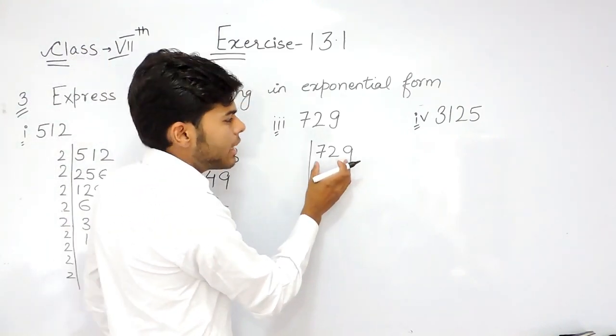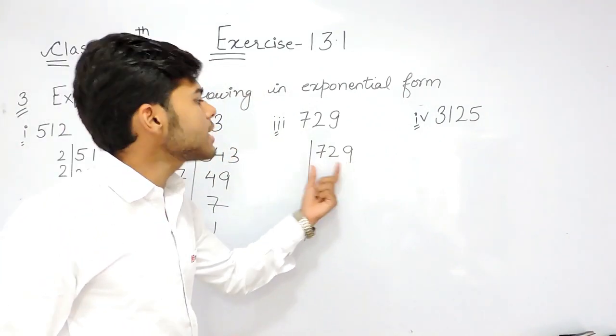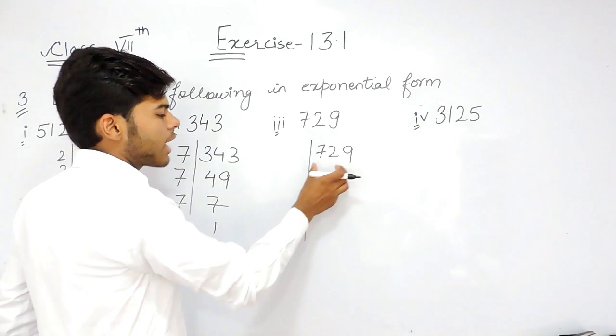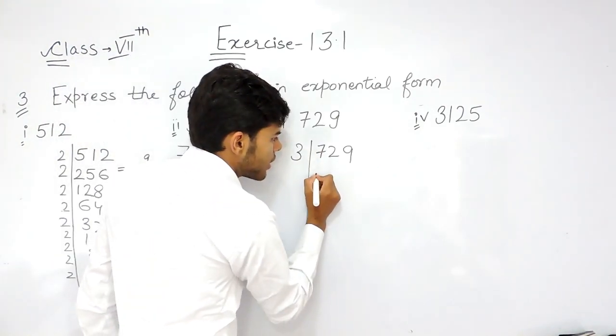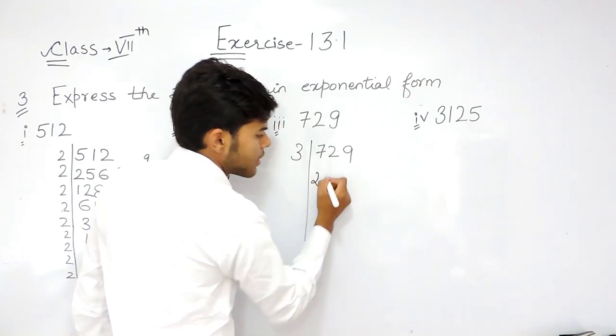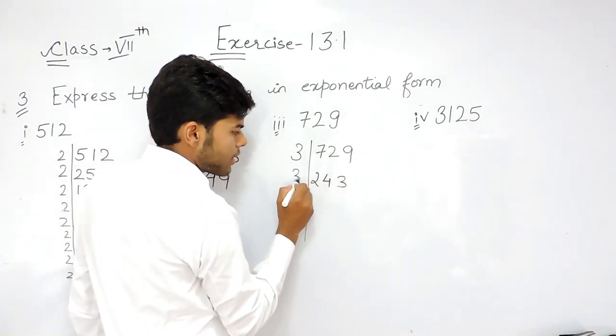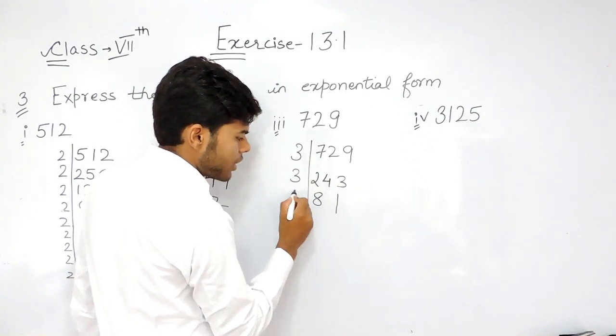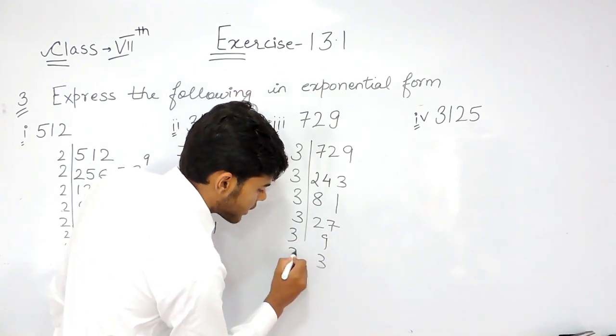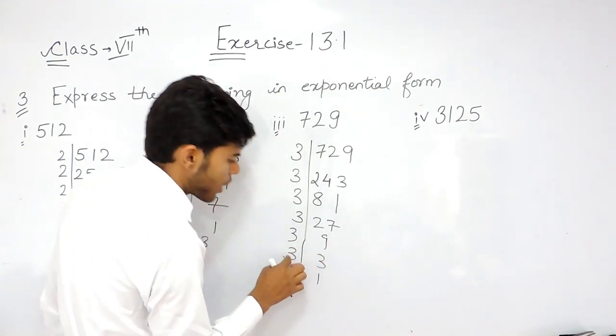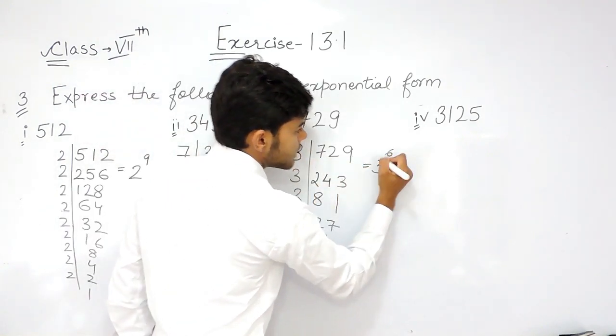This number 729 can be divided by 9, but we will divide it by the smallest prime number possible, which is 3. So, 3 times 243, 3 times 81, 3 times 27, 3 times 9, 3 times 3, and 3 times 1. So there are 1, 2, 3, 4, 5, 6 threes, giving us 3 to the power of 6.